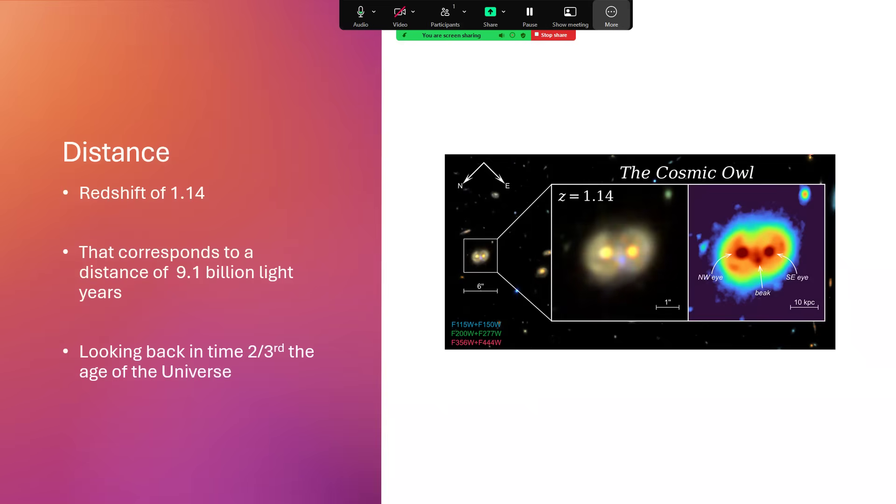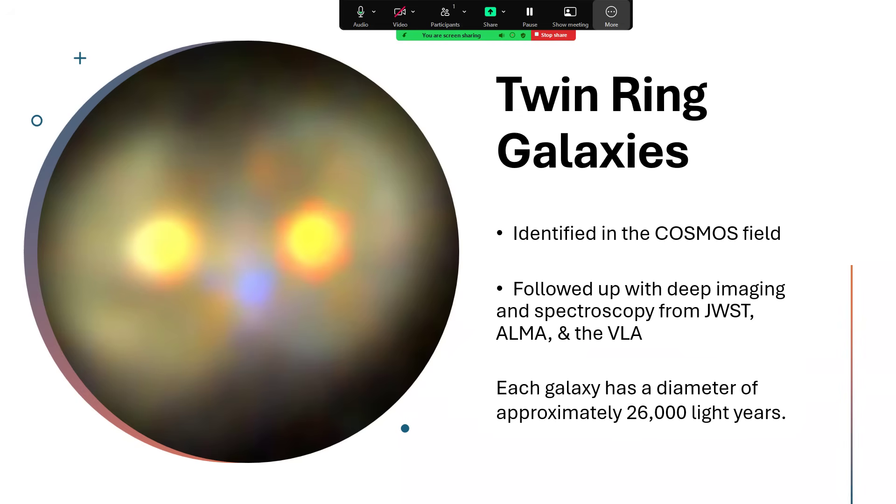We can see the main picture, the more optically normal picture where it says z equals 1.14, the redshift, and then a color enhanced image showing the eyes and the beak - the northwest and southeast eyes and the beak in the center. This fascinating object was first found by the Cosmos Deep Field image but followed up by spectroscopy and imaging with the James Webb Telescope, ALMA which is a radio telescope, and VLA in Chile.